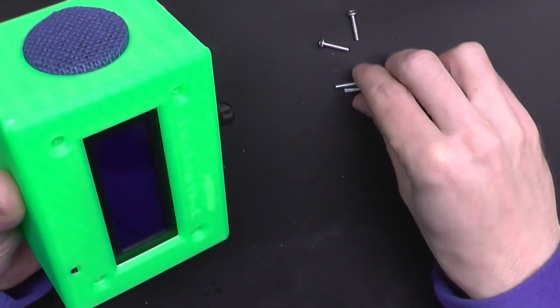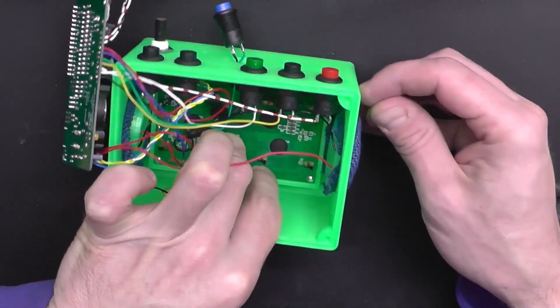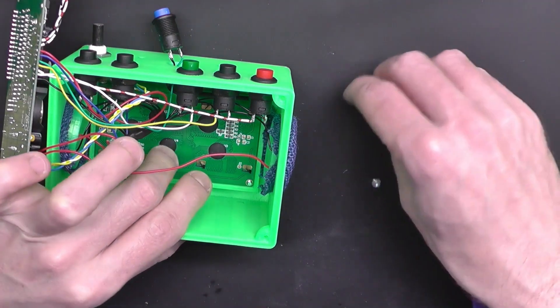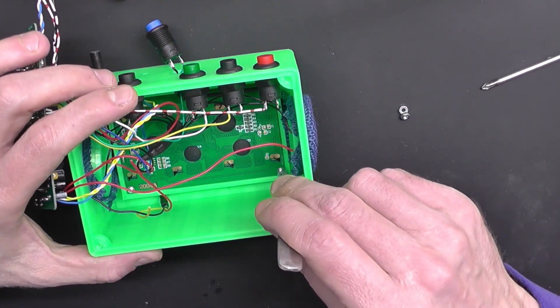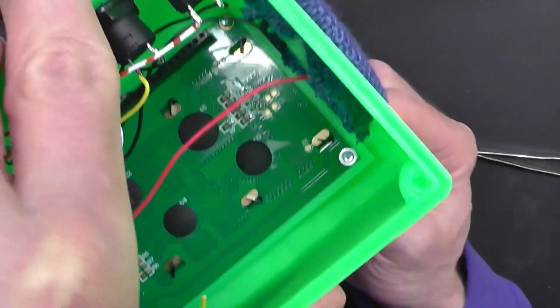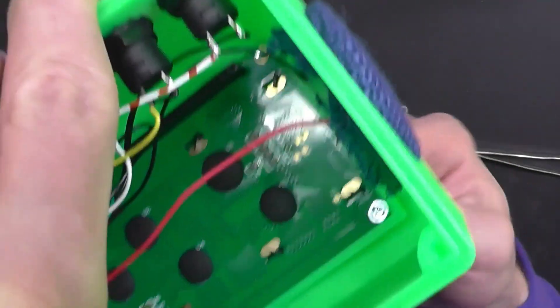And to hold everything in place we're going to use four M3 nuts. You can use whatever tools you may have, pliers, fine pliers would do, just don't put too much pressure on these screws because it's really not necessary.